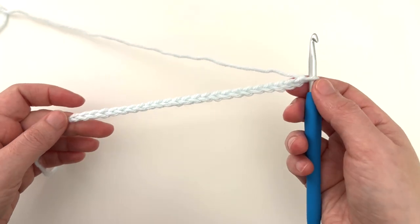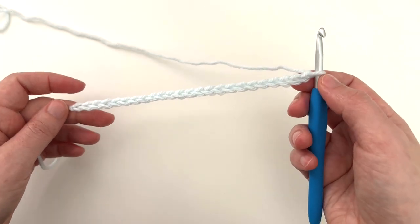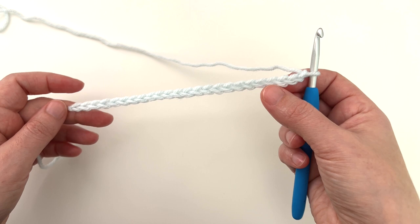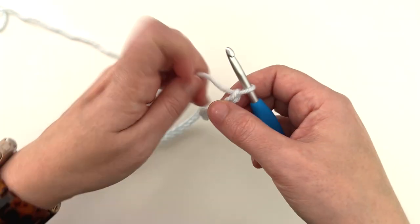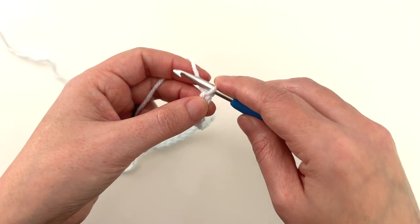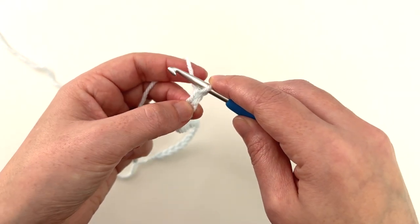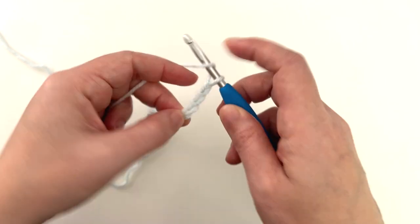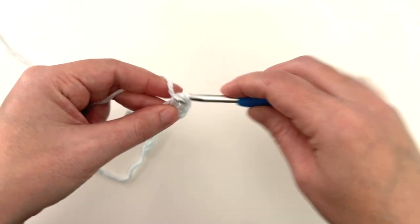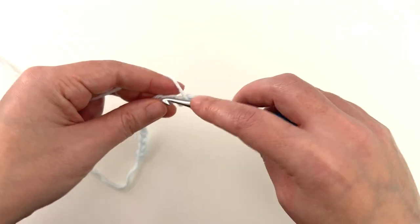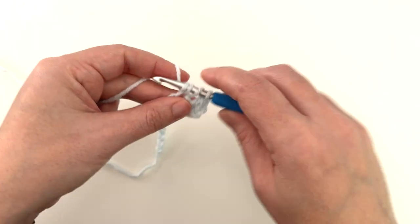Here we have our starting chain of 24 and now we're going to double crochet into the fourth chain from the hook and in each chain across. The loop on your hook does not count. One, two, three, fourth chain. Again double crochet here and in each one to the end. Pause the video and I'll meet you there.